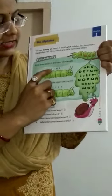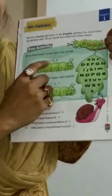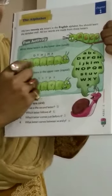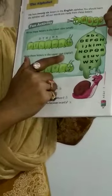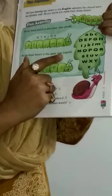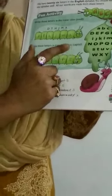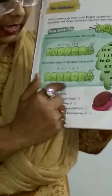D, T, H, J, M, A — you have to write these letters in small letters. And now write these letters in the uppercase. Uppercase means capital letters, so you will write these letters in capital letters.